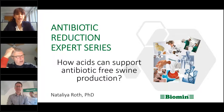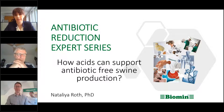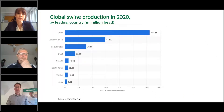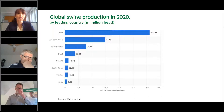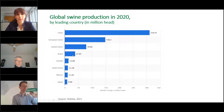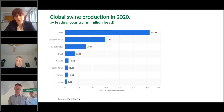I'm very happy to talk today about how acids can support antibiotic-free swine production. Talking about swine production, I believe we all know the global scope. There are a few key producing countries shown here in millions of heads. The main producer is China, followed by the European Union, the United States, and Brazil. Talking about antibiotic use, we have a good dataset from the European Union.